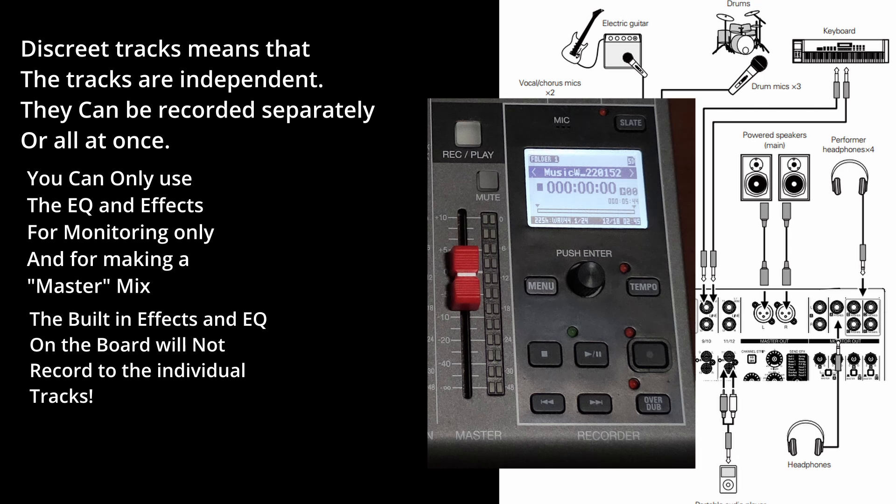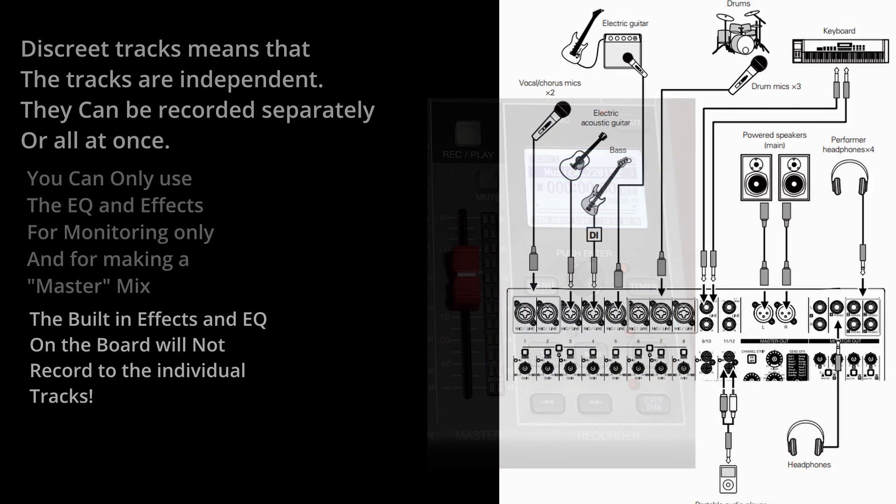You have a stereo master track where you can record your mix. If you've recorded all your tracks and you're mixing through headphones or speakers, using EQ and effects on each track, those will be recorded into your master mix — but effects are not recorded individually to the separate tracks, only in the monitor output.